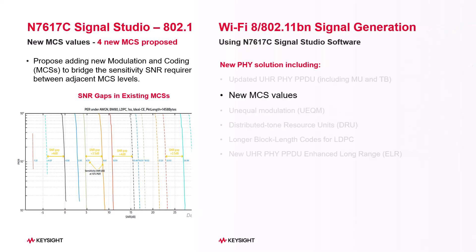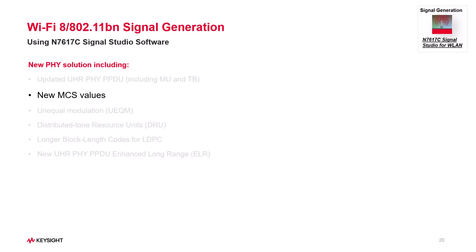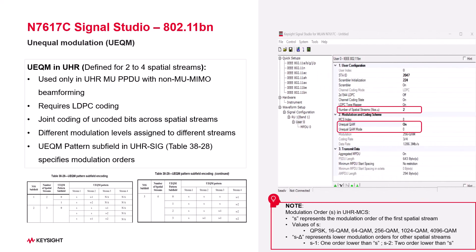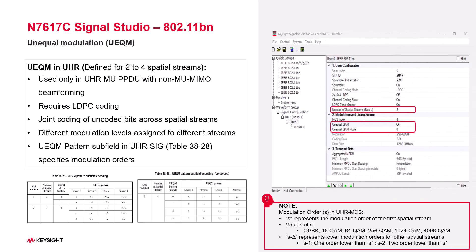Now let's move on to unequal modulation. In MIMO, different streams can use different modulation levels. Just set multiple spatial streams and Signal Studio lets you fine-tune the UECOM settings.